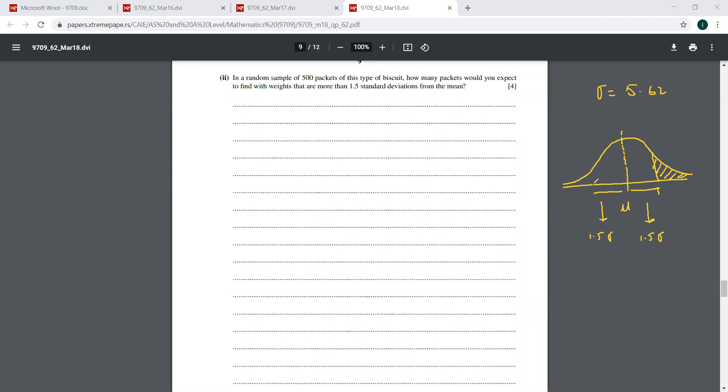So we have to find this region. If it said within 1.5 standard deviations from the mean, then you have to consider both. And if it said less than 1.5 standard deviations, you had to find this one. So now we only have to find this region here.